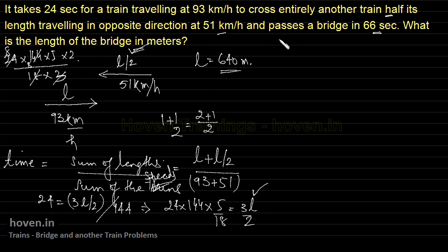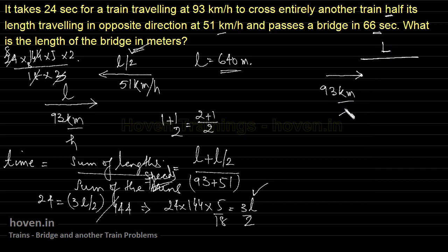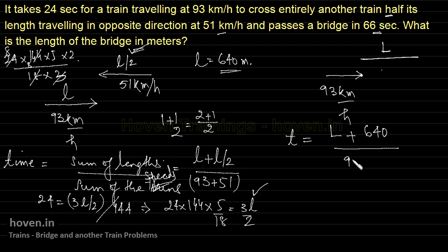Now let us take the second condition. The same train running at 93 kilometers per hour crosses a bridge in 66 seconds. Let the length of the bridge be L. The train approaches the bridge at 93 km/h and crosses it in 66 seconds. The formula for time taken by a train to cross a bridge is: time equals length of bridge plus length of train, divided by speed of the train. Time here is 66 seconds.